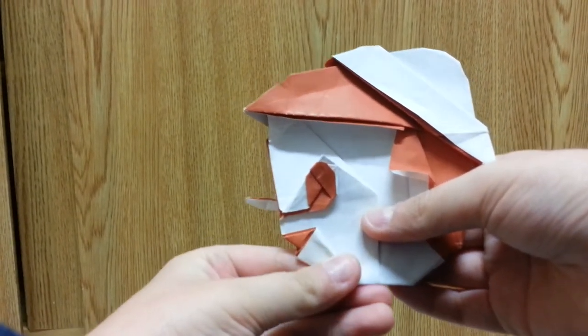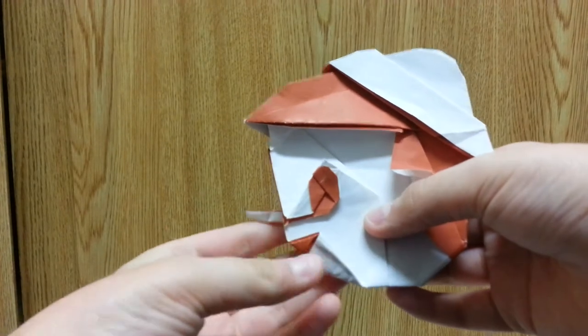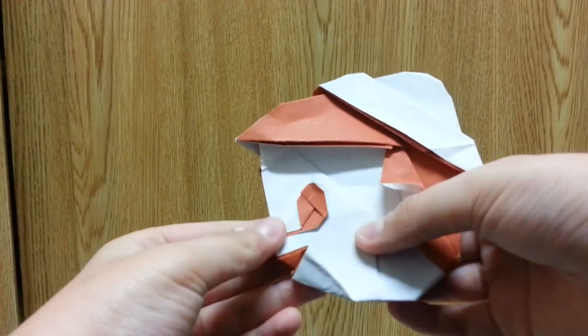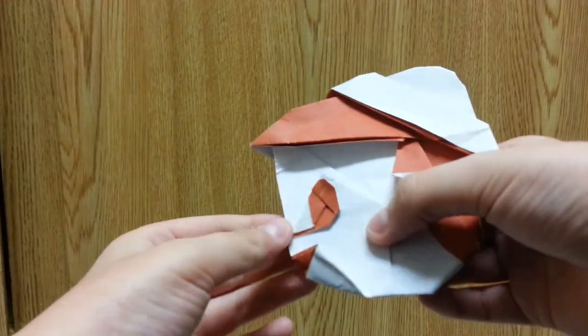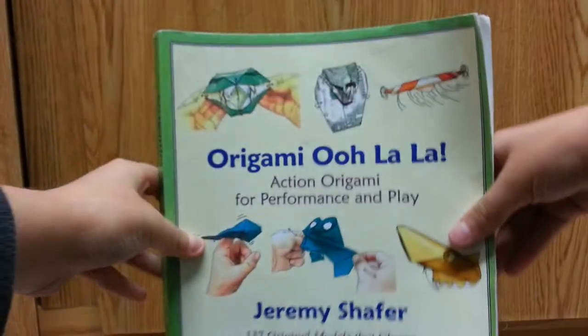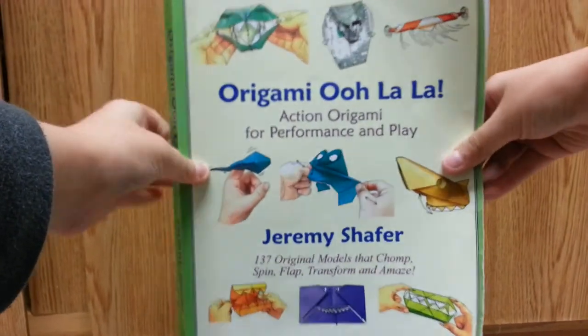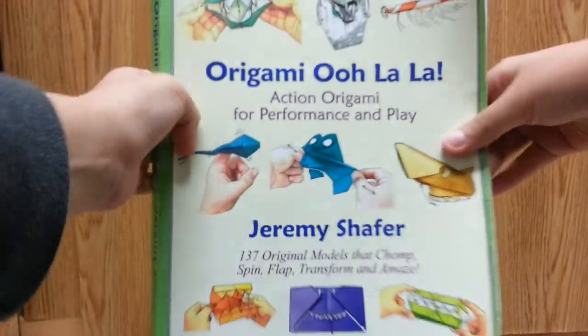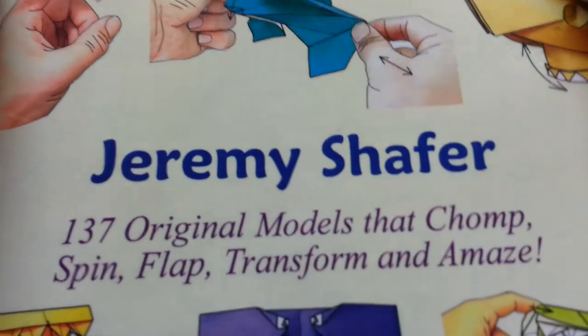Hi guys, Goldenfire here. This is my new Origami Familiar Liar, designed by Jeremy Shafer. This is a model that he designed and published in his second book, Origami Ooh La La, Action Origami for Performance and Play by Jeremy Shafer.